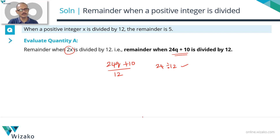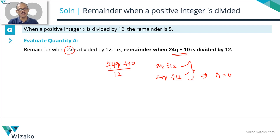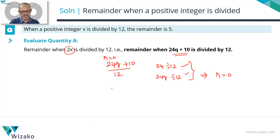Since 24 is divisible by 12, any multiple of 24 — including 24q — is also divisible by 12. For example, 48 and 240 are both divisible by 12. So the remainder when 24q is divided by 12 is 0. That means we only need to find the remainder when 10 is divided by 12, which is 10.